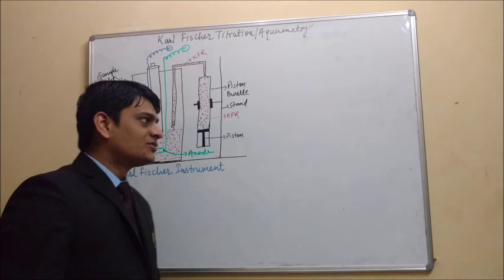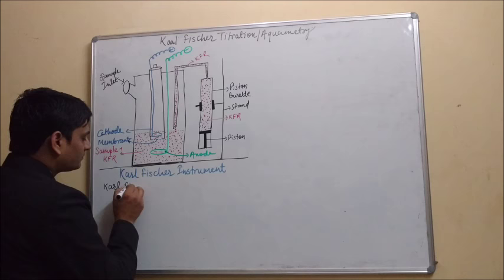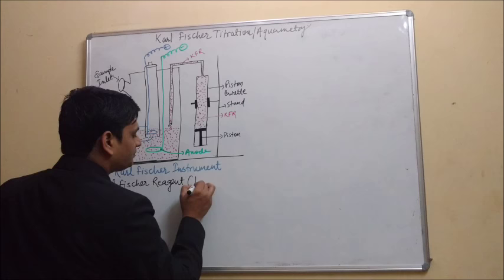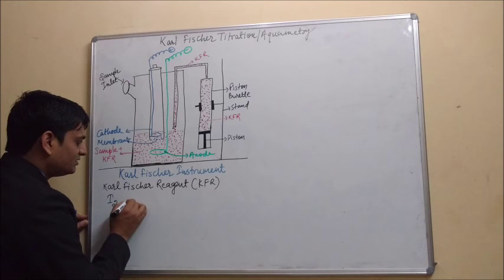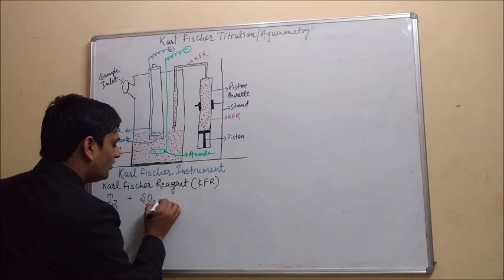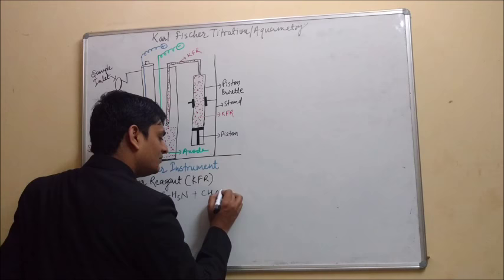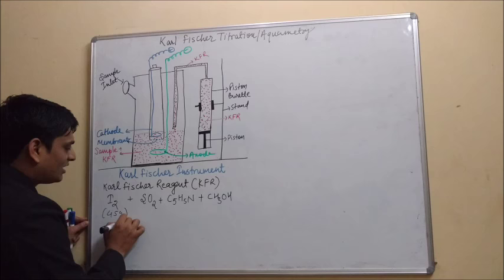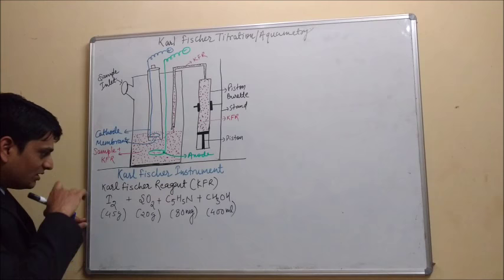First I am going to discuss about the Karl Fischer reagent, that is KFR. The composition of KFR is: it contains iodine (I₂), plus SO₂, plus C₅H₅N that is pyridine, plus methanol. The quantity of iodine is 45 g, SO₂ is 20 g, pyridine 80 mg, and methanol 400 ml.